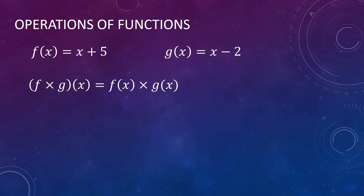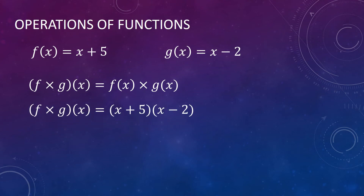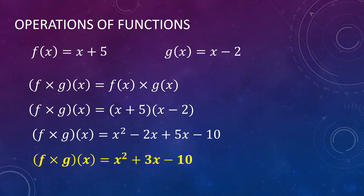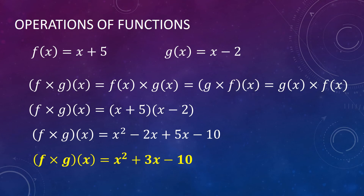Let us now proceed with the multiplication of functions. We have f of x equal to x plus 5 and g of x equal to x minus 2. f times g of x is the same as f of x times g of x. So we simply multiply x plus 5 by x minus 2. This is the same as multiplying two binomials using the FOIL method, giving us x squared minus 2x plus 5x minus 10. So f times g of x equals x squared plus 3x minus 10. Take note that f of x times g of x is the same as g of x times f of x.